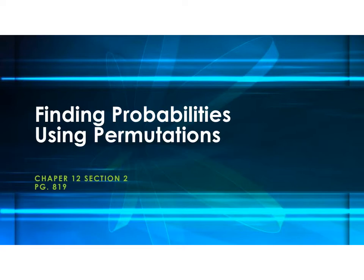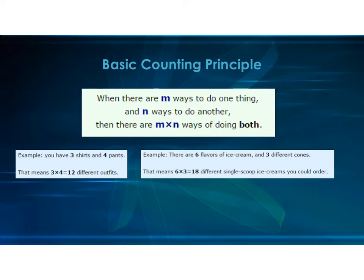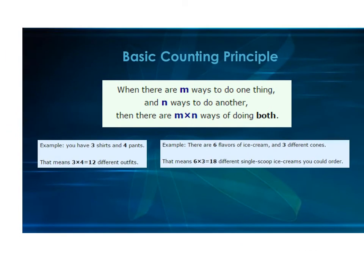Today we're going to learn how to find probabilities using permutations. The first thing we're going to talk about is the basic counting principle. For the basic counting principle, we sort of did this already. What you do is you take the number of outcomes and multiply them together, and that gives you the number of ways that you can do things.